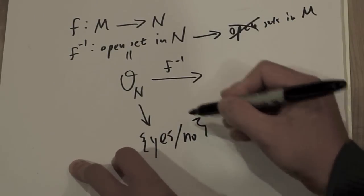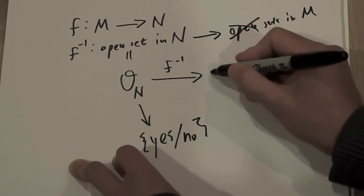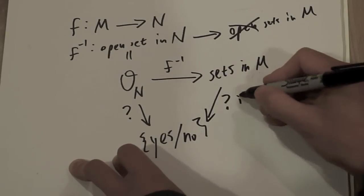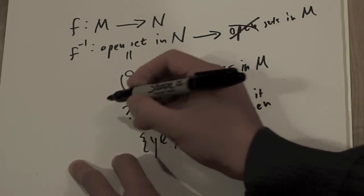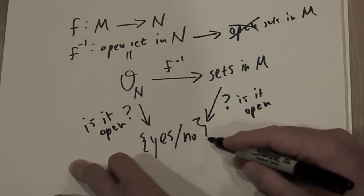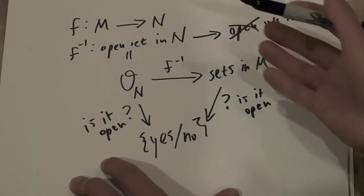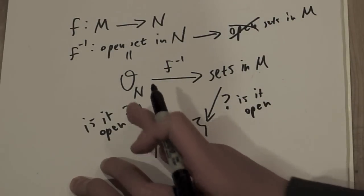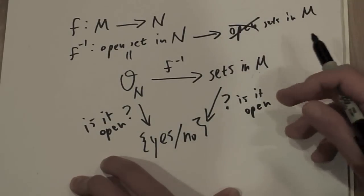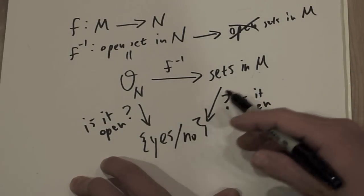And then it'll take it to sets in M. And then we can ask if that set is open also. If the answer is always yes, then this map is continuous. The map F inverse carries open sets on N to open sets in M. That's what continuous means. F inverse carries the topological structure on N over to M.